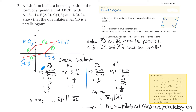Checking gradient of AD using y2 minus y1 over x2 minus x1, it equals 1. The gradient of BC using those coordinate points is also 1. Since m1 equals m2, sides AD and BC must be parallel.